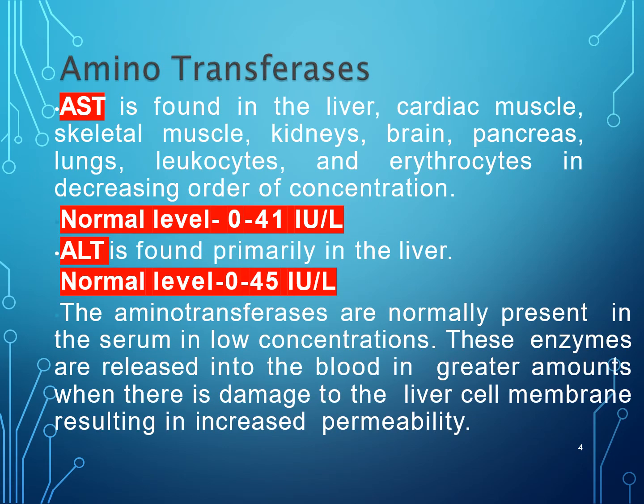Aspartate aminotransferase (AST) is found in the liver, cardiac muscle, skeletal muscle, kidneys, brain, pancreas, lungs, leukocytes, and erythrocytes in decreasing order of concentration. Its normal level is found to be 0 to 41 IU per litre.